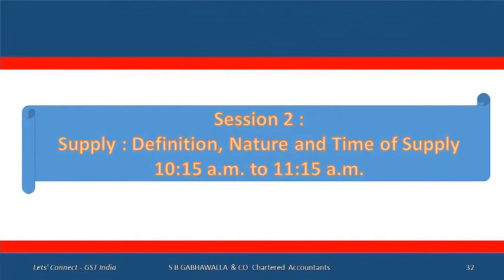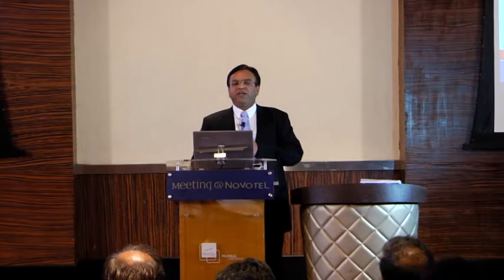We will start with the main part, which is the supply. In this session we have talked about two or three important key areas: the general levy and its classification as intrastate and interstate. We have gone into the concept of supply as being distinct from the current concepts of manufacture, sale, and services. We then went into the concept of taxable person and inclusions and exclusions. With that background we are now going to the real part.